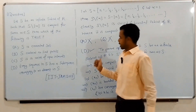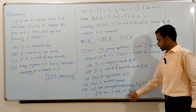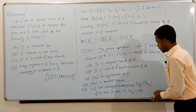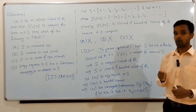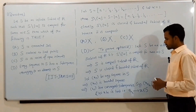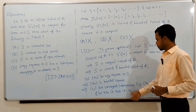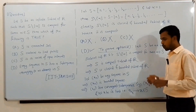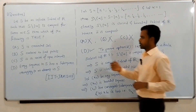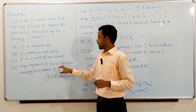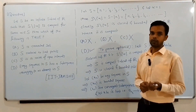Since S is a compact subset of R, S is a closed set, and so S contains all of its limit points. Therefore the limit x of the subsequence {x_{n_k}} must be an element of S. Thus, every sequence in S has a convergent subsequence whose limit is an element of S — which is exactly option D: every sequence in S has a subsequence converging to an element in S. This proves option D. Thank you for watching.